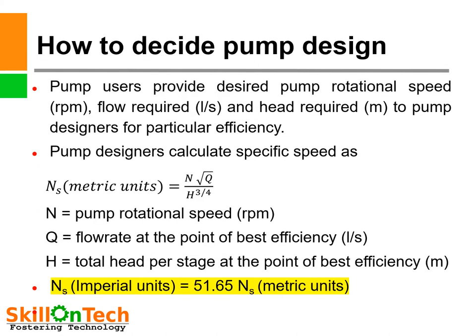Pump users generally provide the desired pump rotational speed in RPM, flow required in liters per second, and head required in meters to pump designers for a particular efficiency. Pump designers calculate specific speed as: Ns (metric units) = N × √Q / H^(3/4), where N is pump rotational speed in RPM, Q is flow rate at the point of best efficiency in liters per second, and H is total head per stage at the point of best efficiency in meters. Specific speed in imperial units equals 51.65 × Ns in metric units.